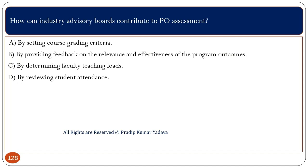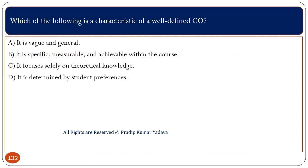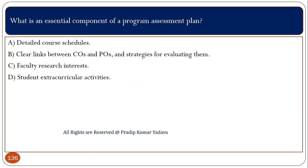How can an industry advisory board contribute to PO assessments? The industry advisory board can give feedback on the relevance and effectiveness of the program outcomes. What is the benefit of using rubrics in CO and PO assessment? Rubrics provide clear criteria for evaluating student performance and ensure consistency in assessment. Which of the following is a characteristic of a well-defined CO? It is specific, measurable, and achievable within the course. Which approach helps in assessing the impact of COs on POs? Reviewing the course and program assessments in relation to each other. What is an essential component of a program assessment plan? A clear link between COs and POs and strategies for evaluating them.